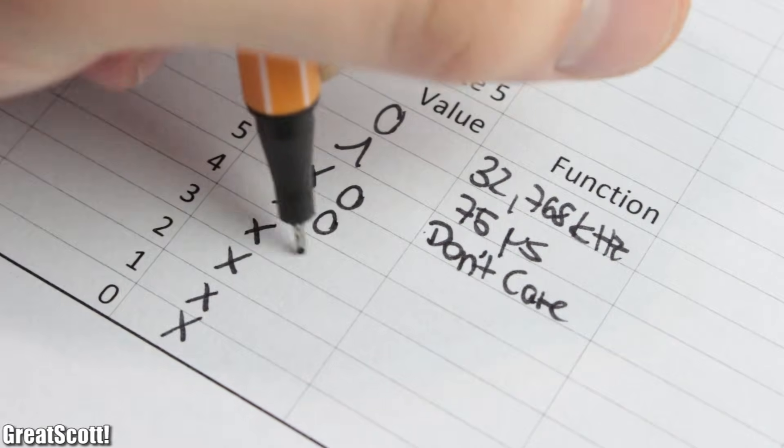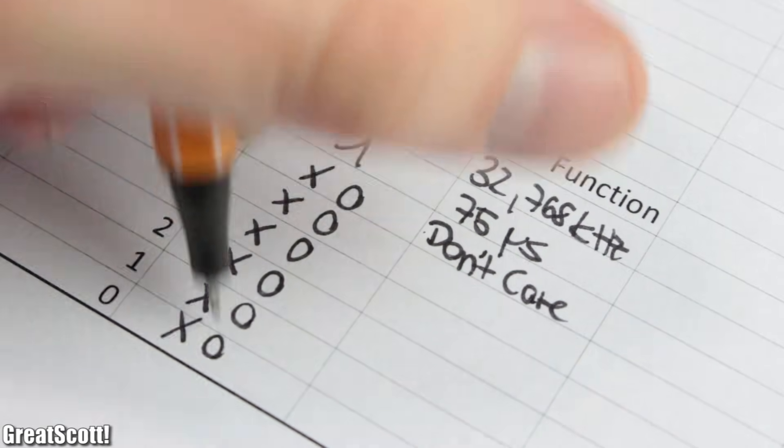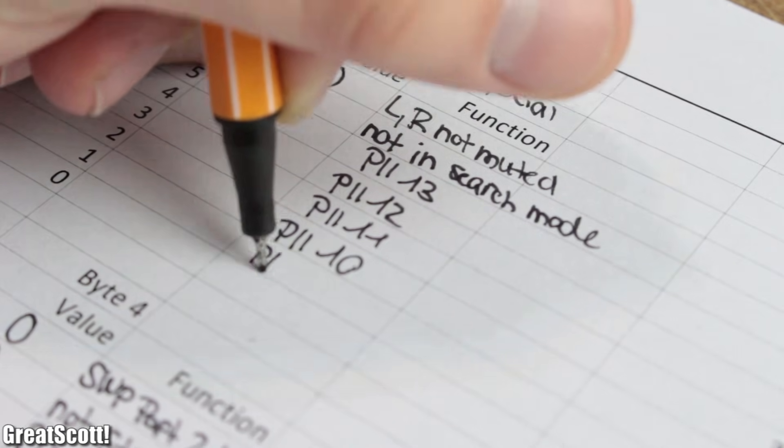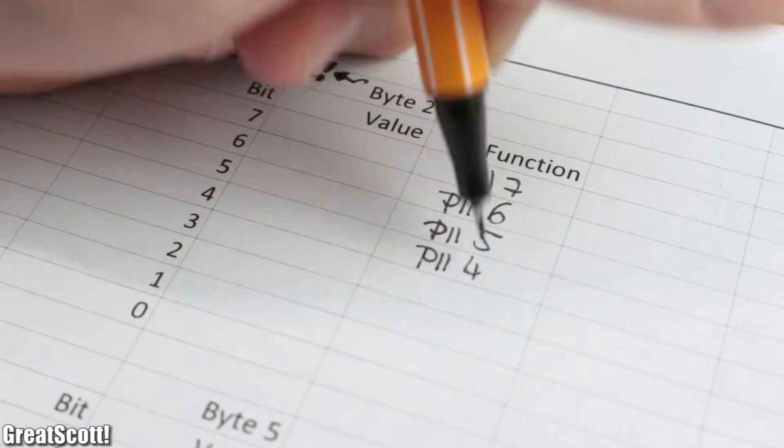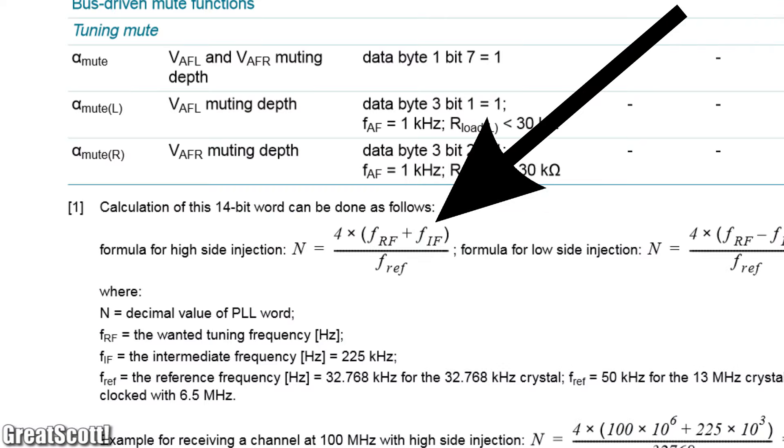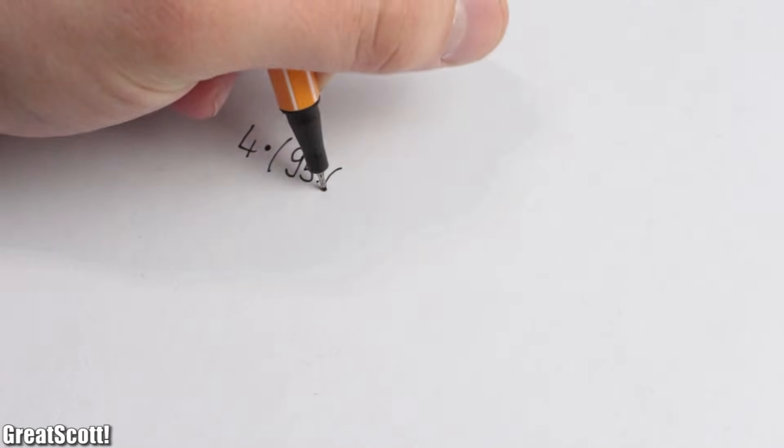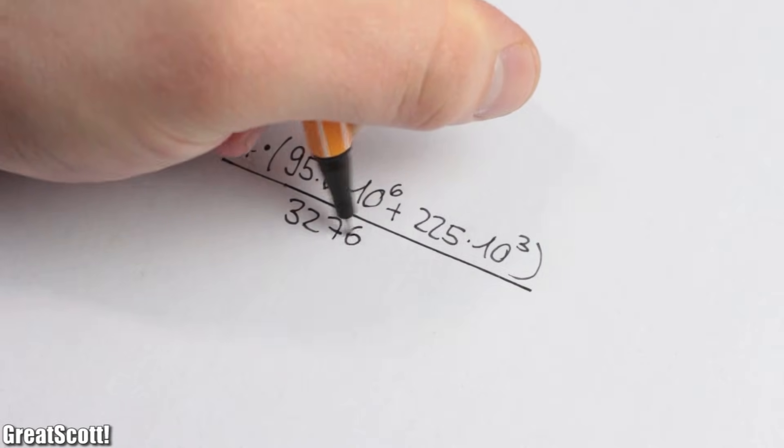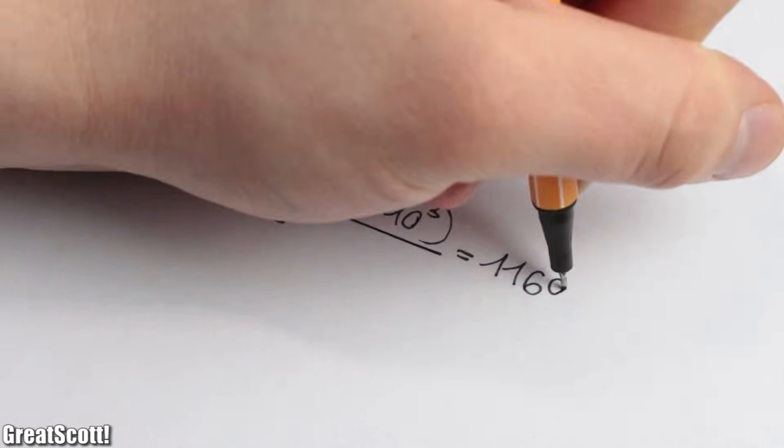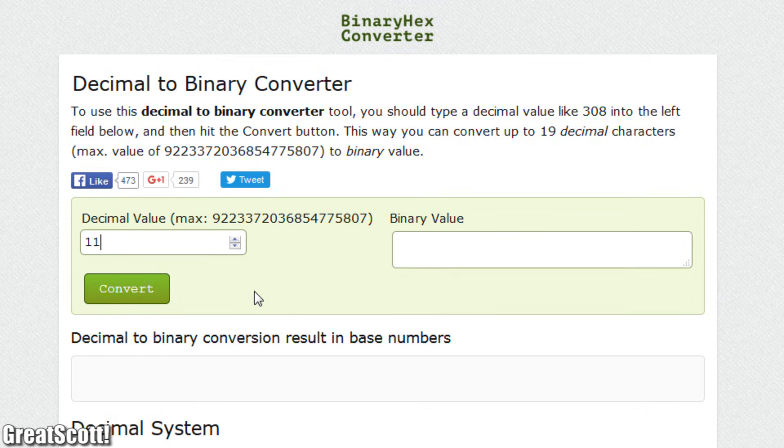It is pretty easy to choose most of the bits correctly by studying the datasheet. But the first and second bytes are a bit special. There we need to define the PLL value, which directly defines the frequency we want to tune in according to this given formula. As an example, I will use 95.6 megahertz and get a decimal value of 11,697.